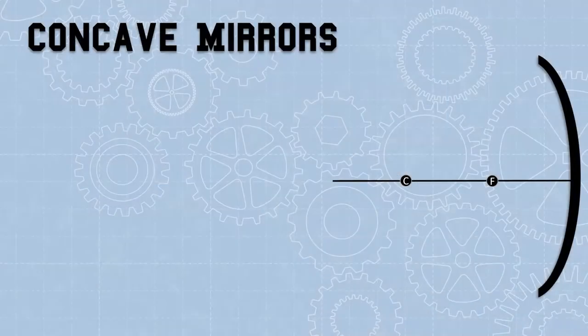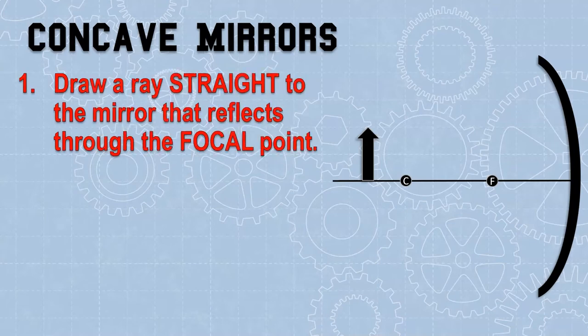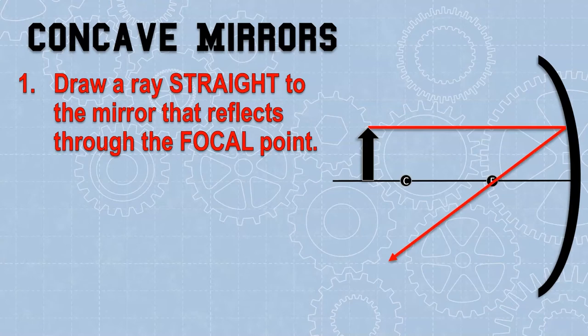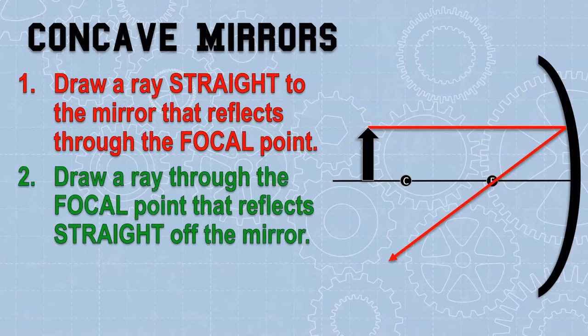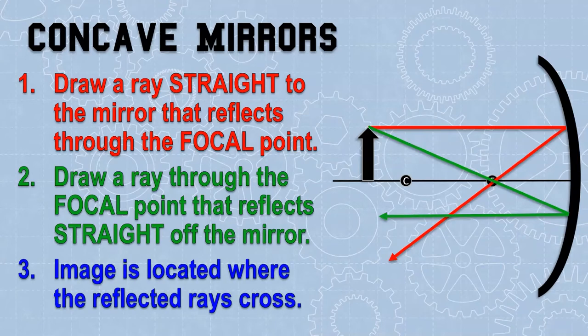To diagram a concave mirror's image, we need an object, the focal point, and the mirror. Step one: draw a ray straight to the mirror — parallel to the midline — that reflects through the focal point. Step two: go through the focal point and it reflects straight back out. Where those two reflected rays cross is where we find our image. This image is real, inverted, and smaller.